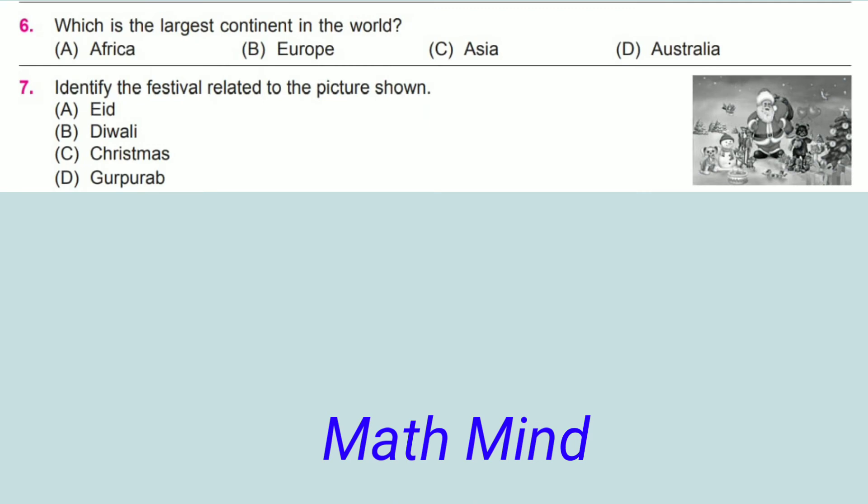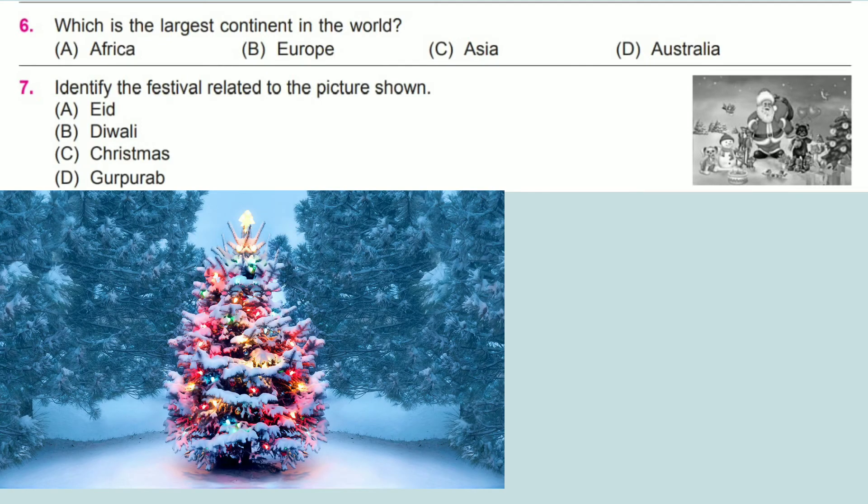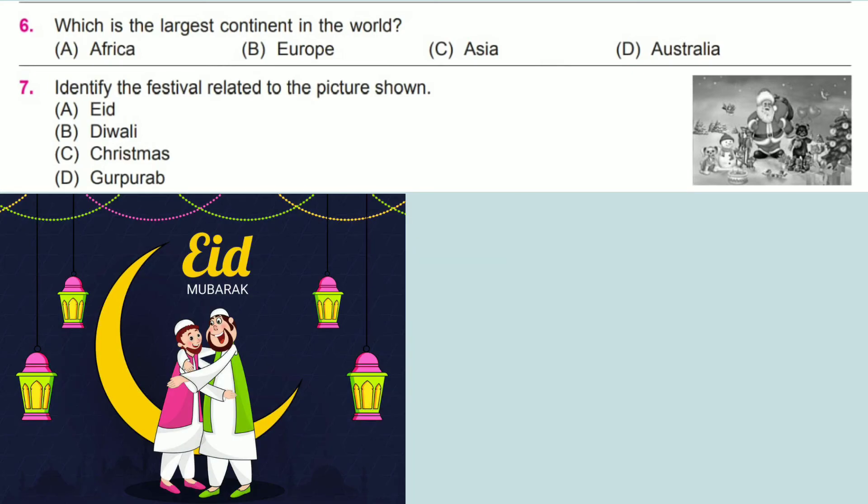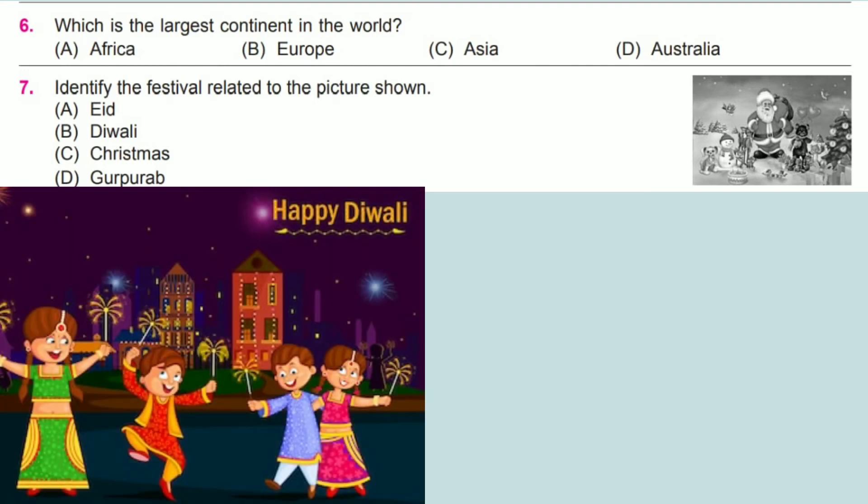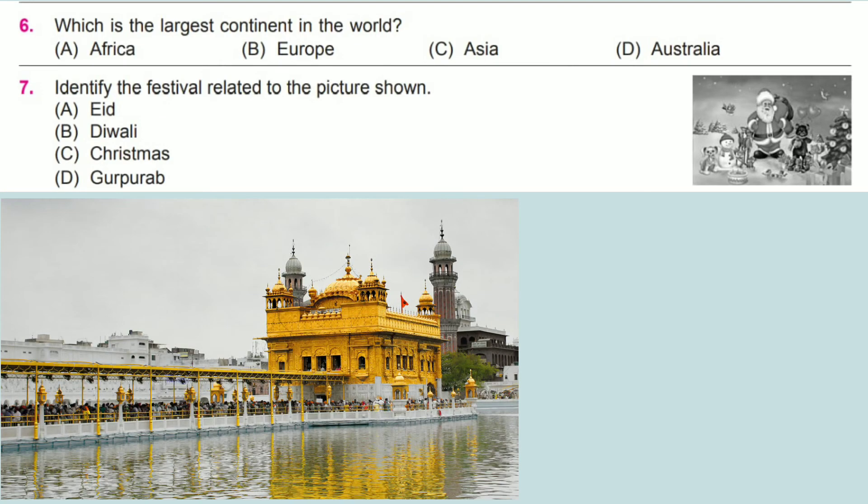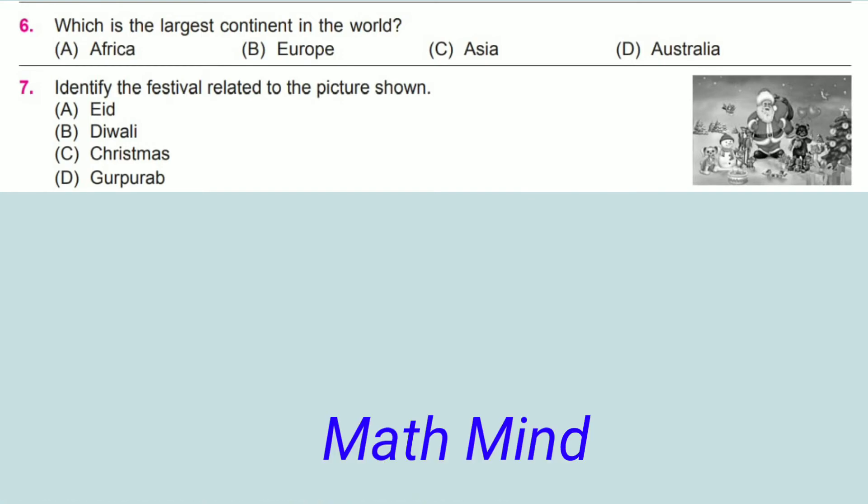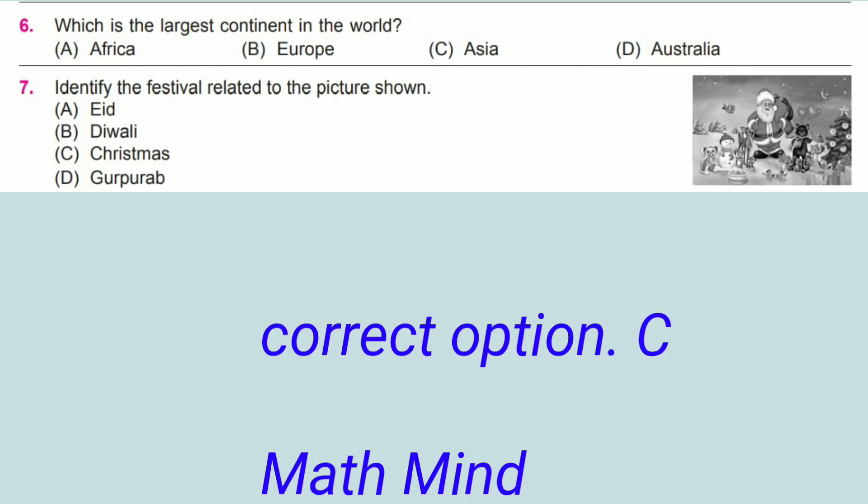Question number 7: Identify the festival related to the picture shown. It is Christmas. Christmas is the festival of Christians. It is the birthday of Jesus Christ. Option A, Eid, is a festival of Muslims. Option B, Diwali, is a festival of Hindus. Option D, Guru Purab, is a festival of Sikhs. Option C is correct. The picture shown here is Christmas, the festival of Christians celebrating the birthday of Jesus Christ.